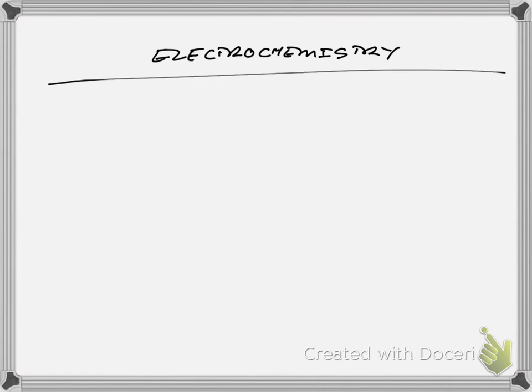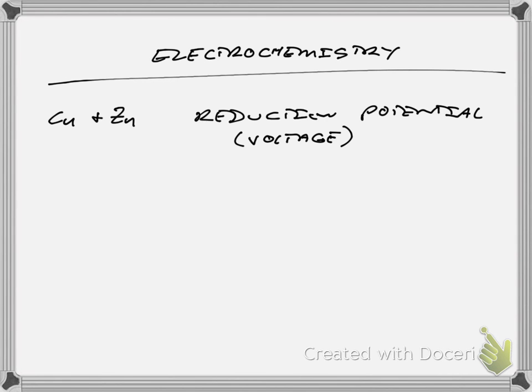We're going to put some notes down about what you learned in your activity the other day related to electrochemistry. You'll recall that what we were measuring was the potential difference between your two electrodes in each of the samples, and what we were looking at was called a reduction potential. Today we need to introduce what we mean by potential to begin with, and then how it applies to these electrochemical cells.